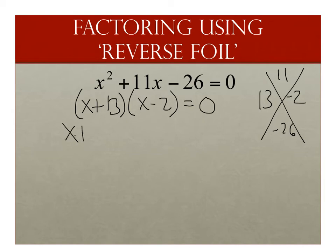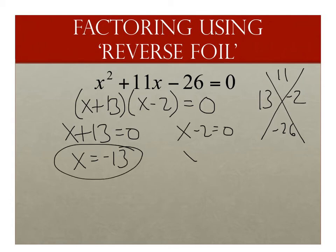Set them equal to 0, each factor. I get x equals negative 13. There's 1. And I have x minus 2 equals 0. So we get x equals positive 2. There's my two answers.